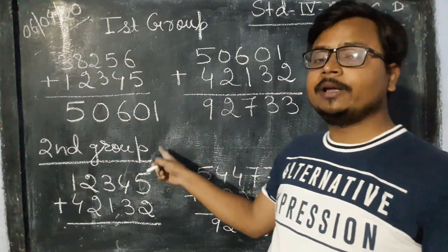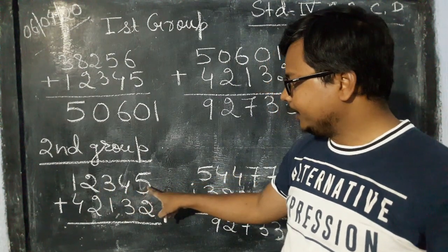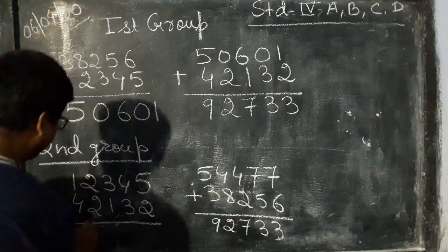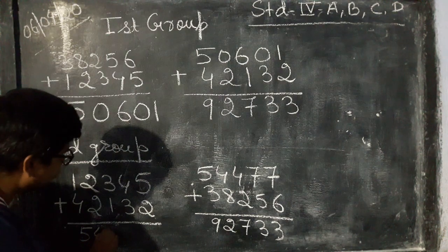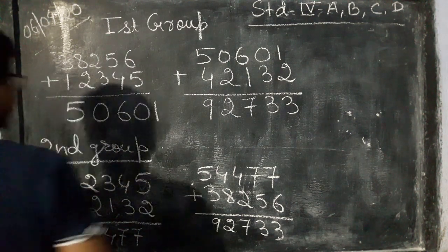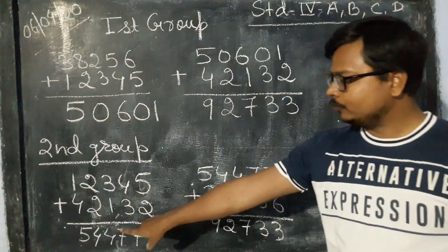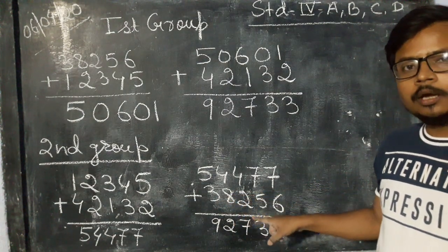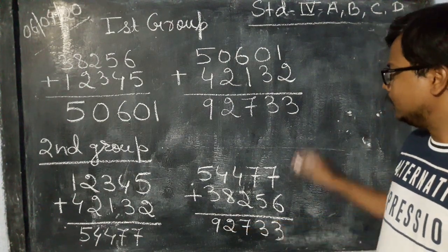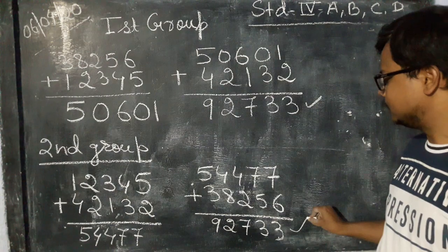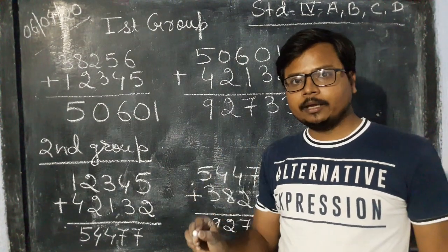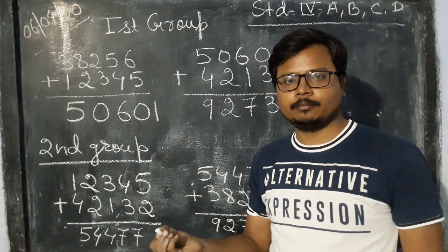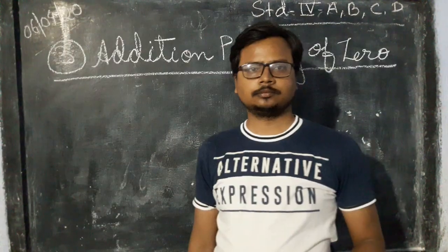In the second group, as we have divided, 38,256 plus bracket open 12,345 plus 42,132 bracket close. We have to add these numbers. The answer comes 54,477. Now, we will add this number that is 54,477 to 38,256. And here also, the answer is 92,733. So, this answer and this answer, both the answers are same. So we can say that if we regroup the numbers in addition, the answer will come same.